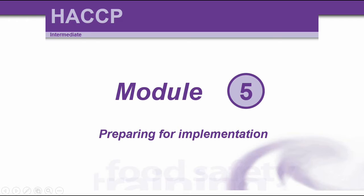Module 5 of the HACCP Intermediate Course, or Level 3: Preparing for Implementation. As I mentioned earlier, this can also be used for Level 2.